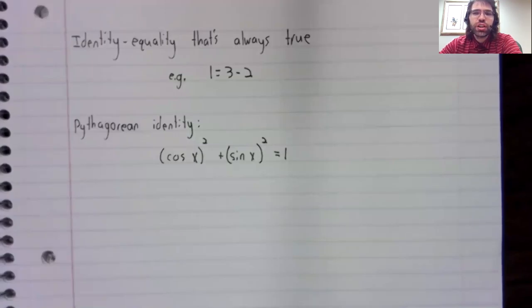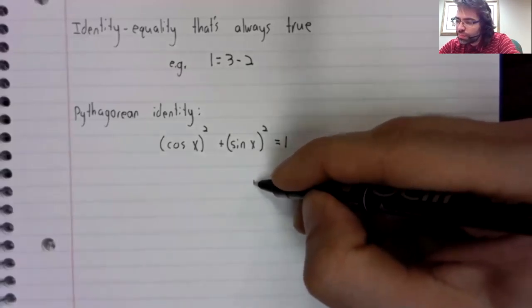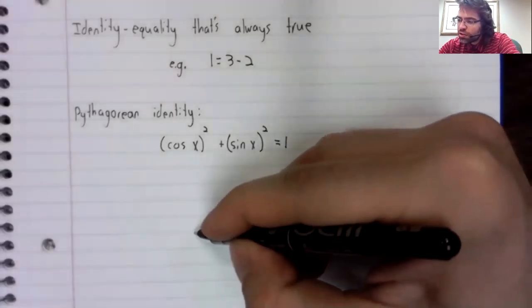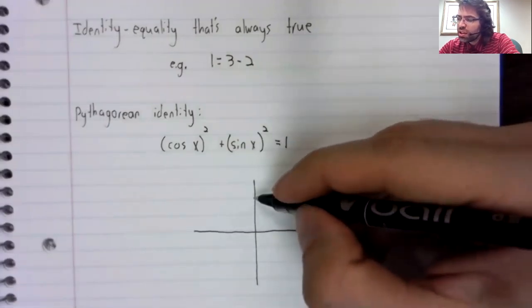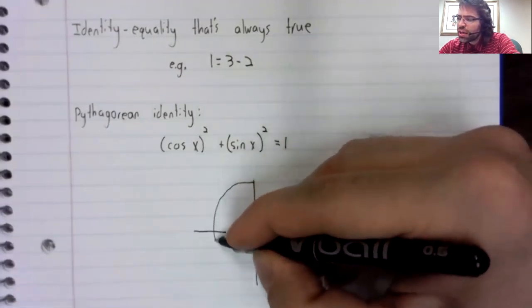Why would that be true? And why do we call it the Pythagorean identity? Pythagoras never studied trigonometry. The ancient Greeks in general didn't study trigonometry.